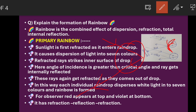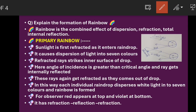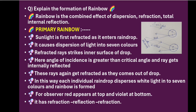In the case of the primary rainbow, the observer sees red color at the top and violet color at the bottom.